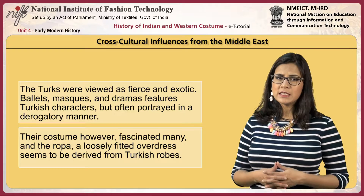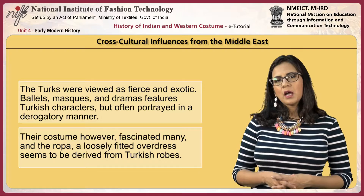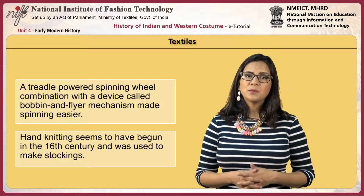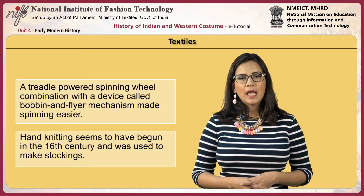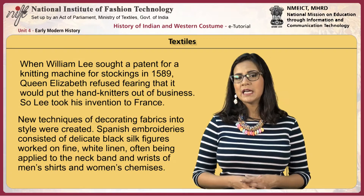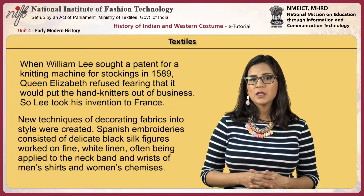Their costume, however, fascinated many, and the ropa, a loosely fitted overdress, seems to be derived from the Turkish robes. During this period, a treadle power spinning wheel combined with a device called bobbin and flyer mechanism made spinning easier. Hand knitting seems to have begun in the 16th century and was used to make stockings. When William Lee sought a patent for a knitting machine for stockings in 1589, Queen Elizabeth refused, fearing that it would put the hand knitters out of business. So Lee took his invention to France.